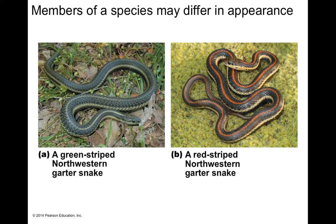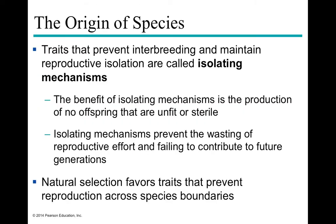It's really difficult to draw distinctions between species. When organisms are not able to interbreed, we have reproductive isolation, and anything that maintains that reproductive isolation is called an isolating mechanism. Isolating mechanisms have a benefit in that we end up with no offspring that are unfit or sterile — no hybrids. They help prevent wasted reproductive energy, since creating a hybrid that fails to contribute to future generations is a waste of that reproductive effort.